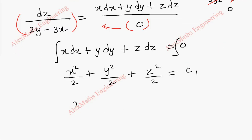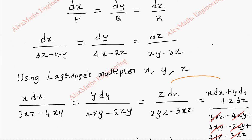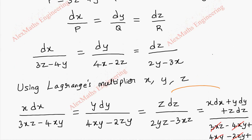Taking LCM, we get a common denominator of 2, which is carried to the other side. So it becomes 2c1, which we shall take as the constant a, giving x squared plus y squared plus z squared equal to a. Now we have to choose another set of multipliers.